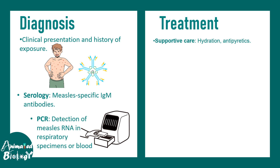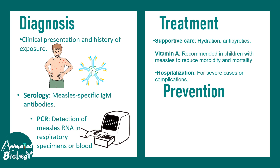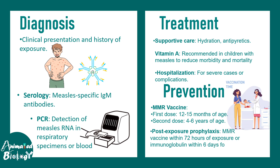Treatment involves keeping the patient hydrated and using antipyretics to manage symptoms. Vitamin A is recommended for children with measles. Hospitalization may or may not be required, but prevention is better than cure — the MMR vaccine is critical and should be given to every baby at an early stage. Post-exposure prophylaxis with the MMR vaccine within 72 hours of exposure can also reduce the risk of morbidity.